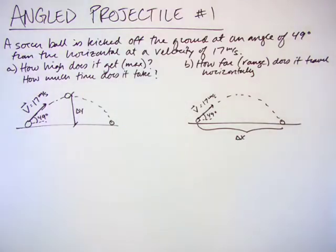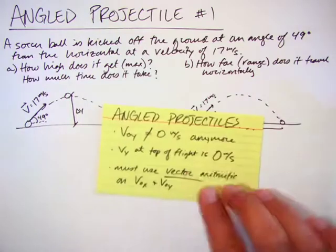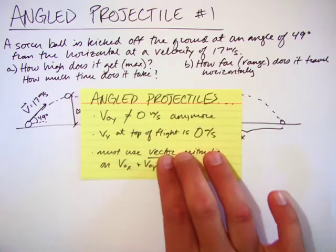In this example we're going to look at how we deal with angled projectiles. Angled projectiles are projectiles that are launched up from the ground, and it could be launched off of a cliff as well at an angle, but let's start with a simpler one where it's launched off the ground.